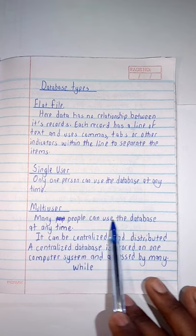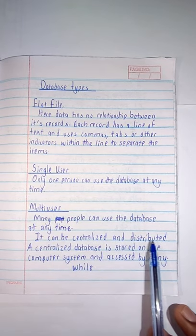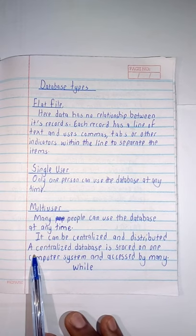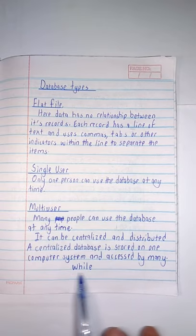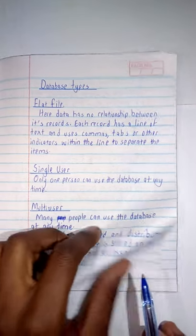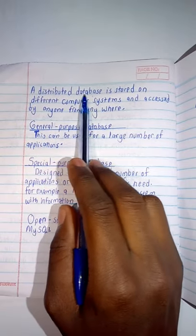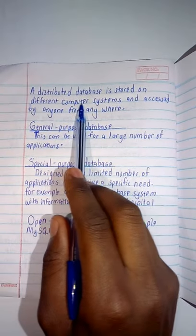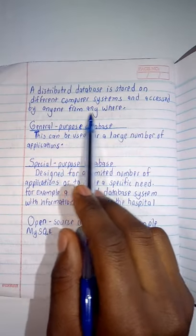Databases can be centralized or distributed. A centralized database is stored on one computer system and accessed by many. A distributed database is stored on different computer systems and accessed by anyone from anywhere.